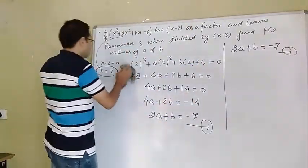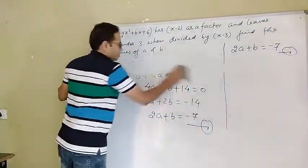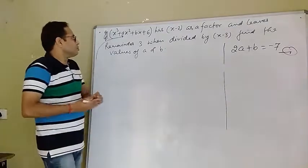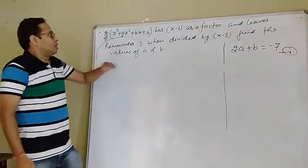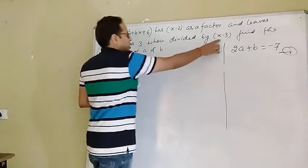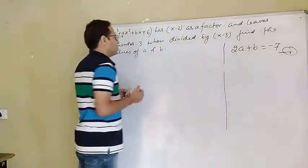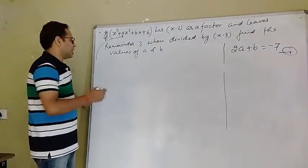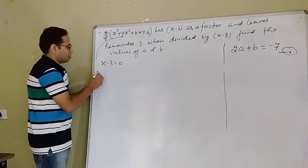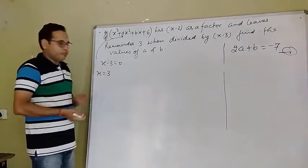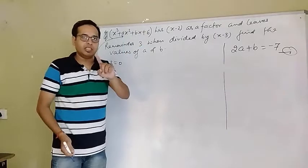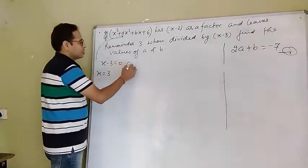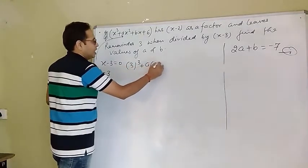Now for equation number 2: the polynomial leaves remainder 3 when divided by x - 3. So by remainder theorem, if x - 3 = 0, then x = 3. If I put x = 3 in the given polynomial, the remainder will be 3.